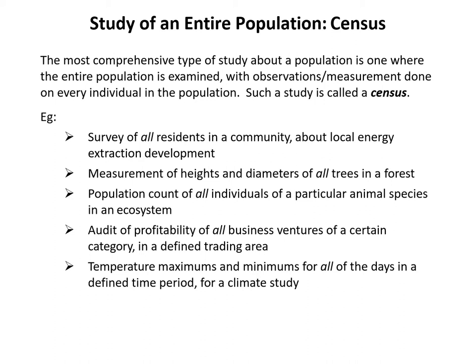The ideal situation when looking at a population is to conduct what's called a census. A census is a study where every single individual in the population is observed or measured. For example, if we want to find out what residents in a community feel about a local project and we're able to survey every single resident, that would be a census. Similarly, if we measure every single tree in a forest to find the average height or diameter, that would also be a census.